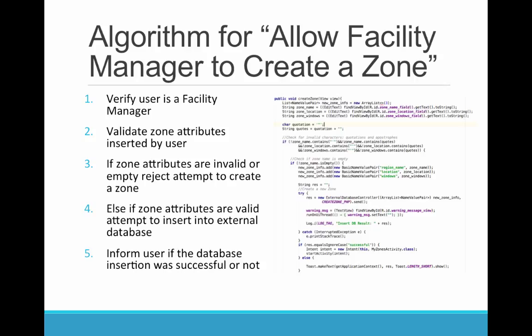The main algorithm for allowing a facility manager to create a zone is as follows. First, we verify that the user is a facility manager. If the user is indeed a facility manager, we then validate the input values provided by the user. If the input values are valid, we attempt to query and insert the new zone into the database. If there wasn't already a zone by the same name, the query will return successful and we show a success message to the user. Otherwise, the user is notified that the query has failed.